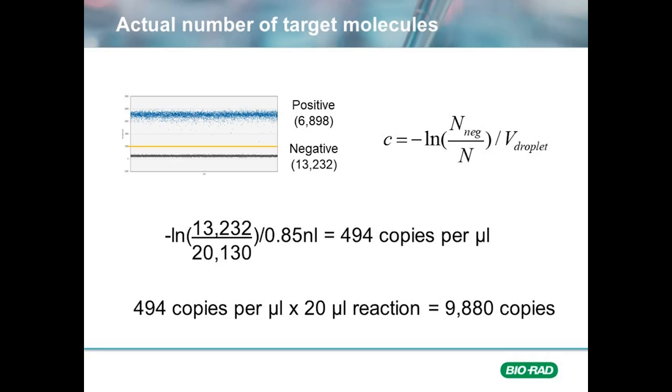This value is different than the 6,898 positive events we have read, because it now takes into consideration co-occupancy and the random distribution, as we corrected by Poisson analysis. Now, of course, bear in mind that there is analysis software that will automatically calculate these values for you.